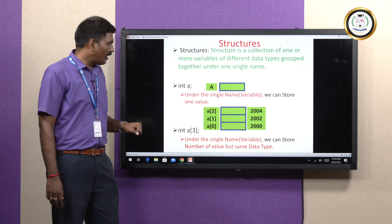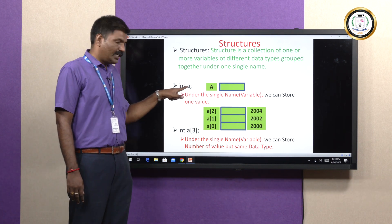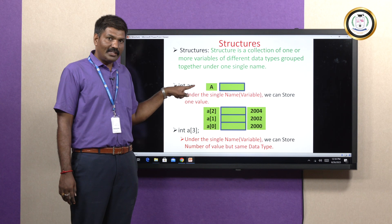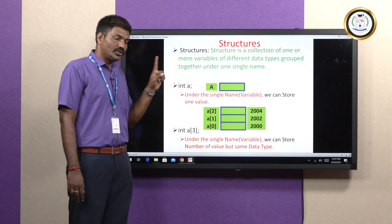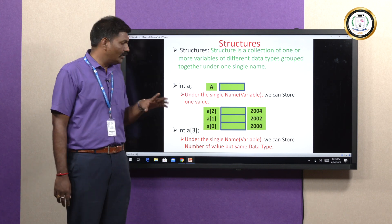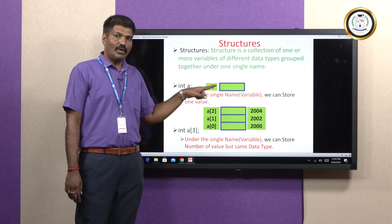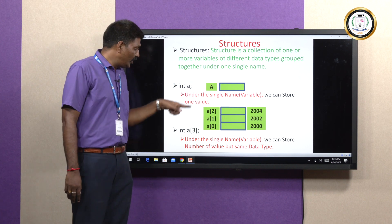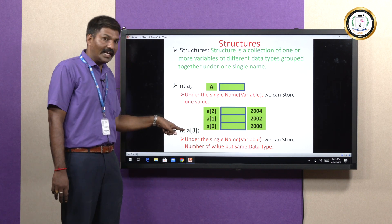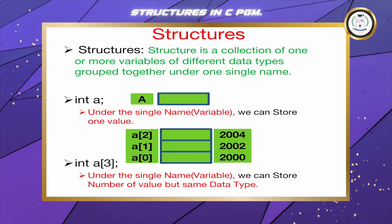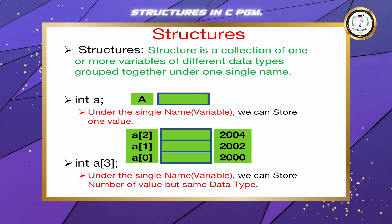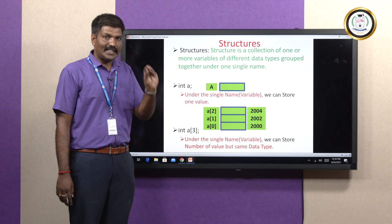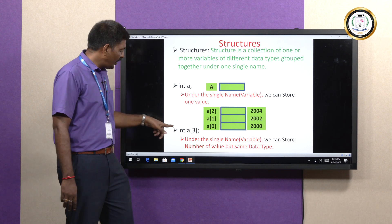Then there is the array. With integer data type variable a, we have the drawback that we can only store one value. If you want to store more than one value, you need to go for an array. However, there is also a drawback with arrays: all values must be of the same data type.